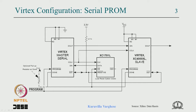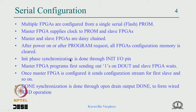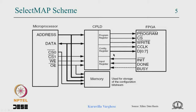Each FPGA takes its own time; the last slave programs last. The DONE pin is wired through a pull-up with open drain — when it goes high, the rest of the circuit knows programming is done. While programming, all pins are tristated, and all flip-flops are reset internally by the FPGA at the end of configuration. In the SelectMap scheme, the FPGA supports a 16-bit or 32-bit parallel configuration interface, requiring additional signals that may not match CPU protocol, so a CPLD or parallel port is needed.